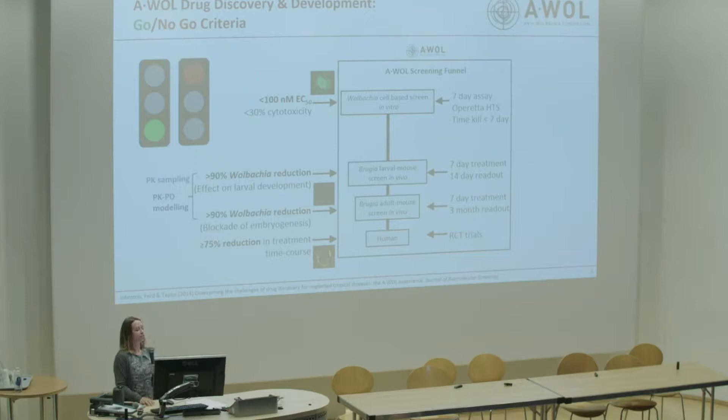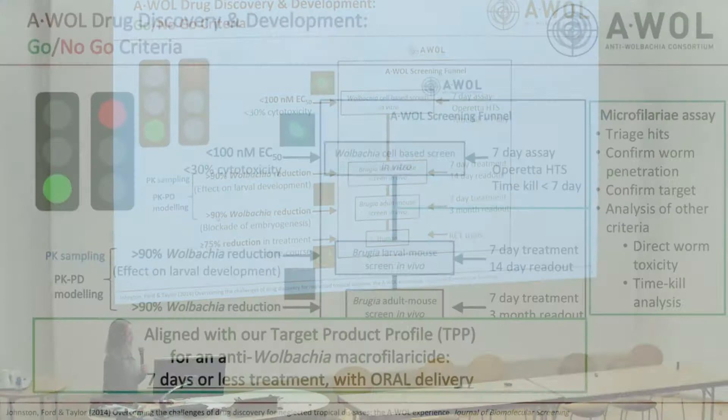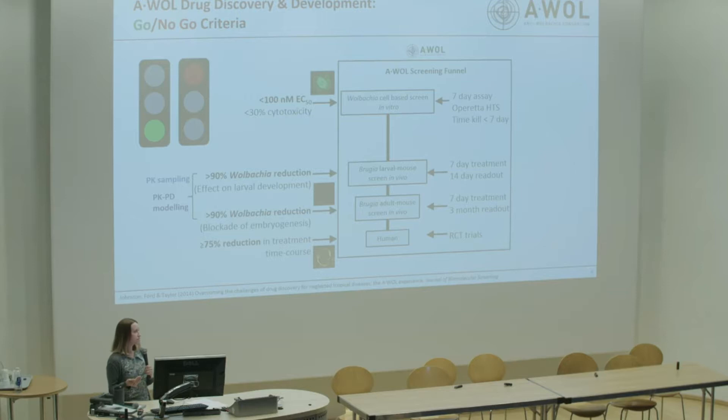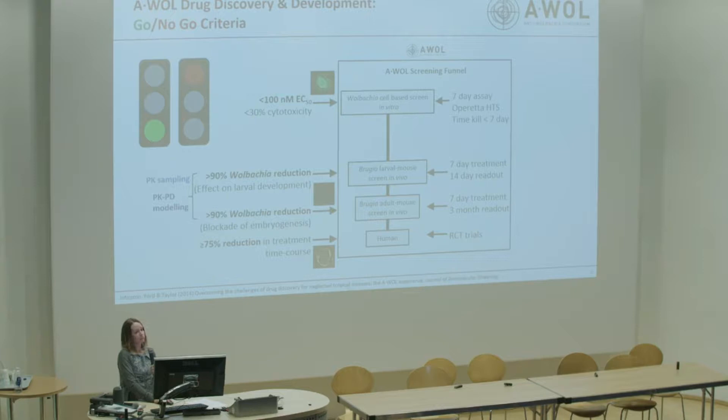We're always looking for greater than 90% Wolbachia reduction, because evidence from doxycycline trials shows that reaching that threshold leads to macrofilaricidal activity. All of this is supported by PK sampling and PK/PD modelling throughout, so we don't progress things requiring very high doses in the mouse that we don't understand in the human context. And ultimately, what we're looking for in trials is a 75% reduction in treatment time — moving from four weeks to one week.